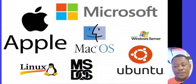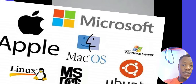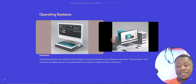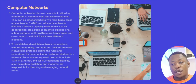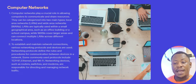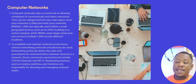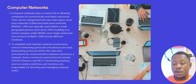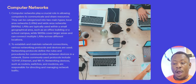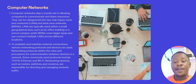We have different types of operating systems and we'll talk about all of them in our next lesson. Computer networks play a crucial role in allowing computers to communicate and share resources. They can be categorized into two main types: local area networks (LAN) and wide area networks (WAN). LANs are typically used within a small geographical area such as an office building or a school campus, while WANs cover a large geographical area and can connect multiple LANs across different locations.